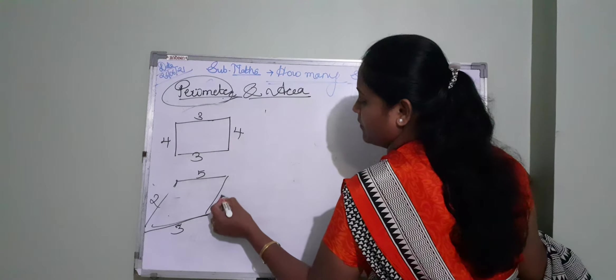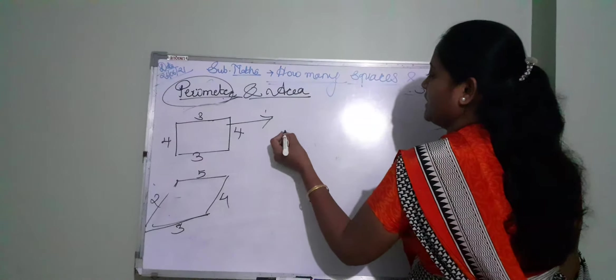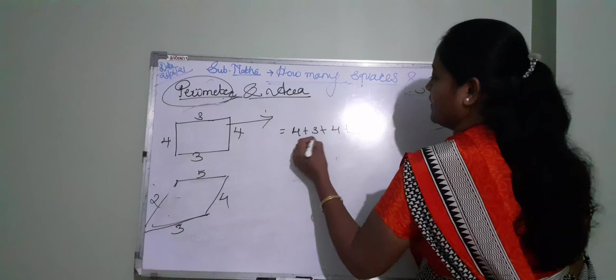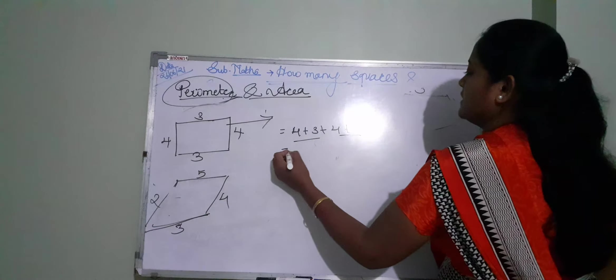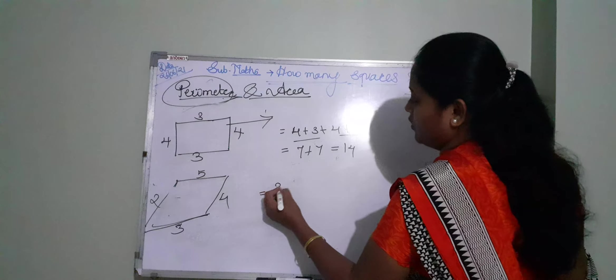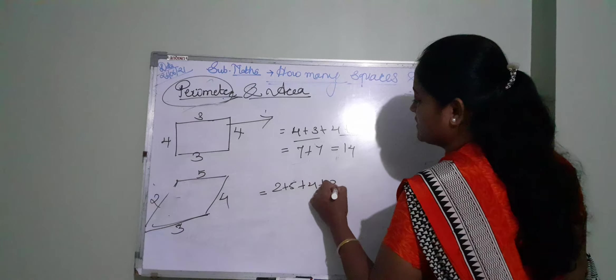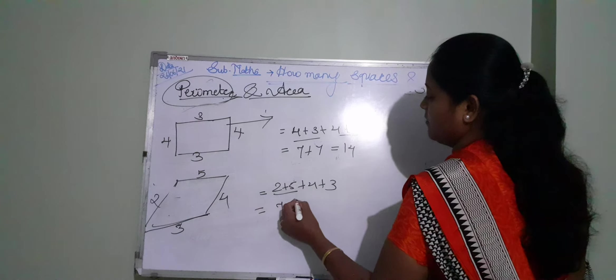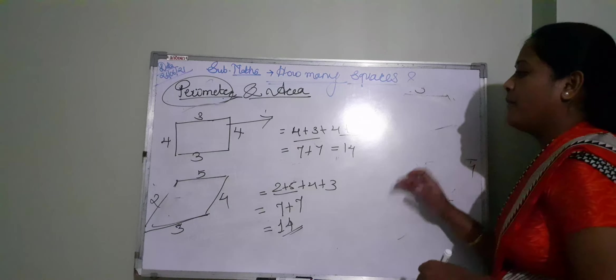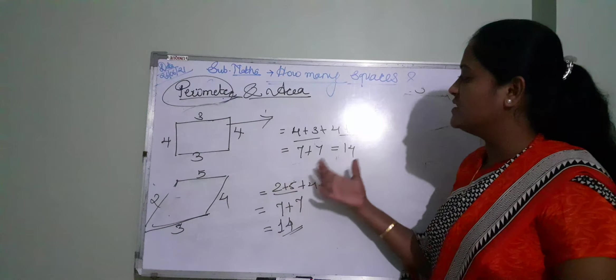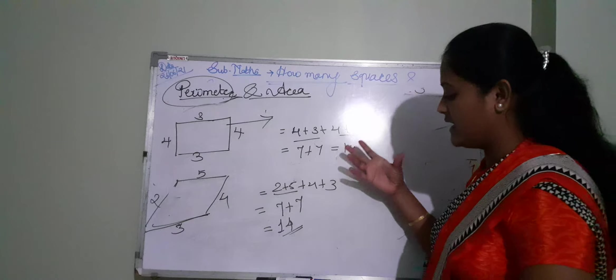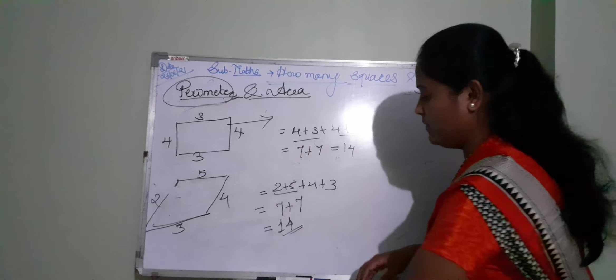It's 4. So, perimeter of that figure means 4 plus 3 plus 4 plus 3, so it's 7 plus 7, it's 14. And 2 plus 5 plus 4 plus 3, it's 7 plus 7, it is also 14. Understood students? Perimeter of that figure, that means you just add the sides, the measurement of sides are given, you just add the measurement of sides only.